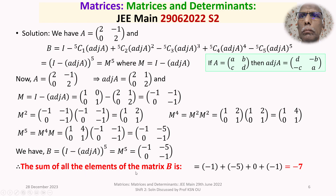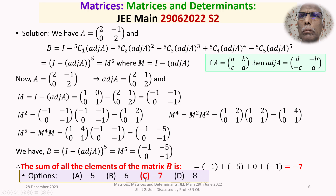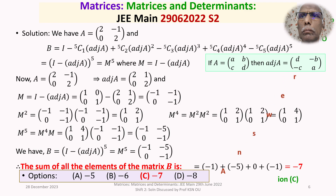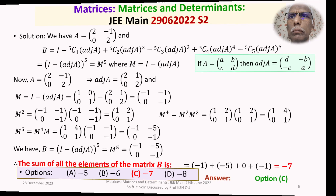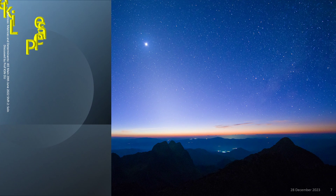The sum of all the elements of matrix B is obtained as minus 7. Looking at our options, minus 7 appears against option C. Therefore the answer to this question is option C. That concludes the detailed discussion of this problem from the section matrices and determinants. It is a very simple and straightforward question. I hope you have understood the solution, and I wish you all the best. Thank you.